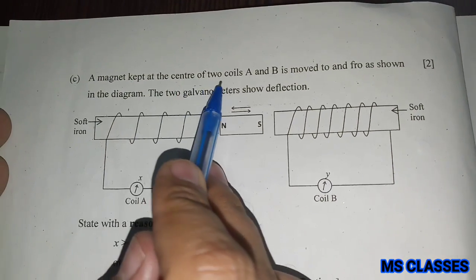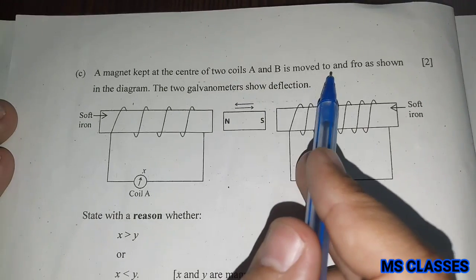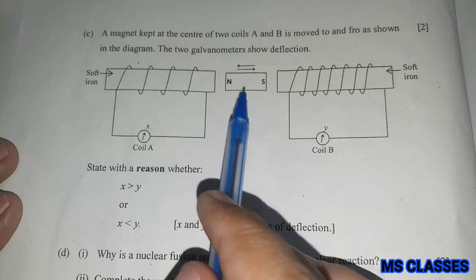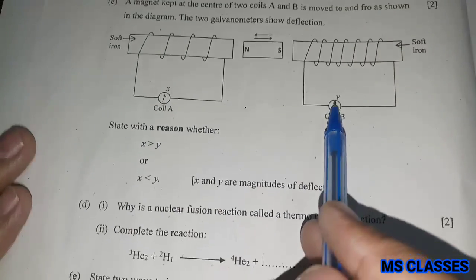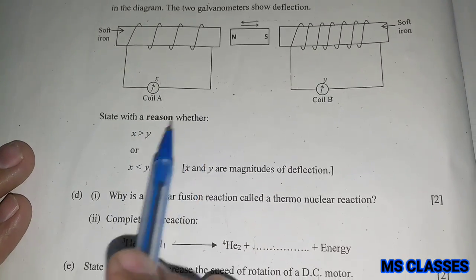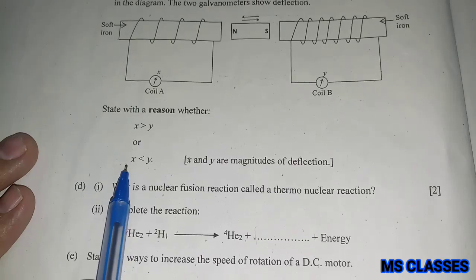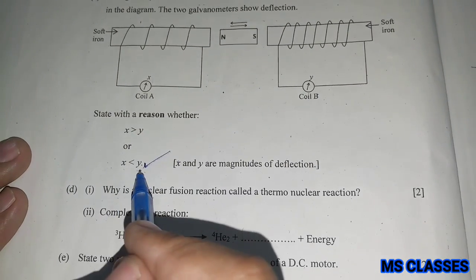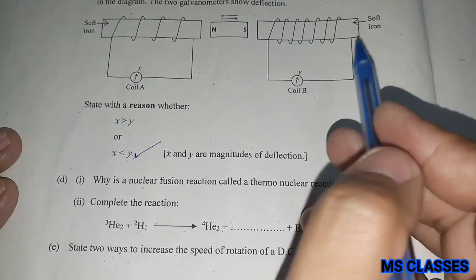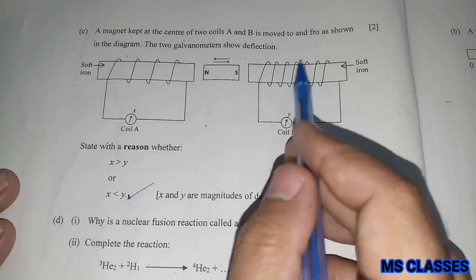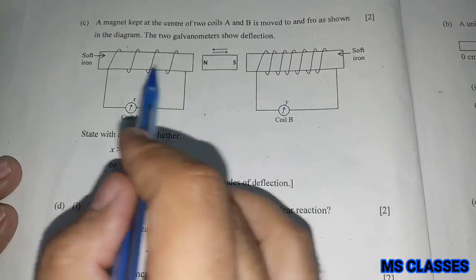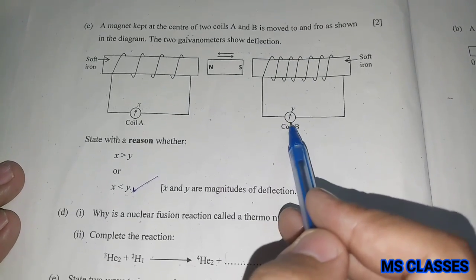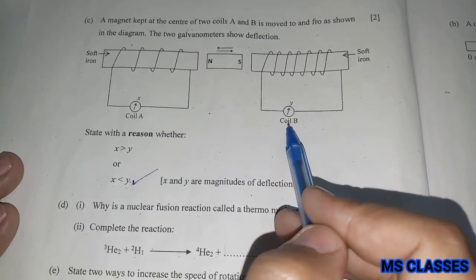A magnet kept at the center of two coils A and B is moved to and fro as shown in the diagram. The two galvanometers show deflection. State with the reason whether x is greater than y or x is less than y. The answer is x is less than y, as you can see that here the number of turns is more as compared to the first. So as we have more number of turns, means we would have more deflection in the galvanometer.